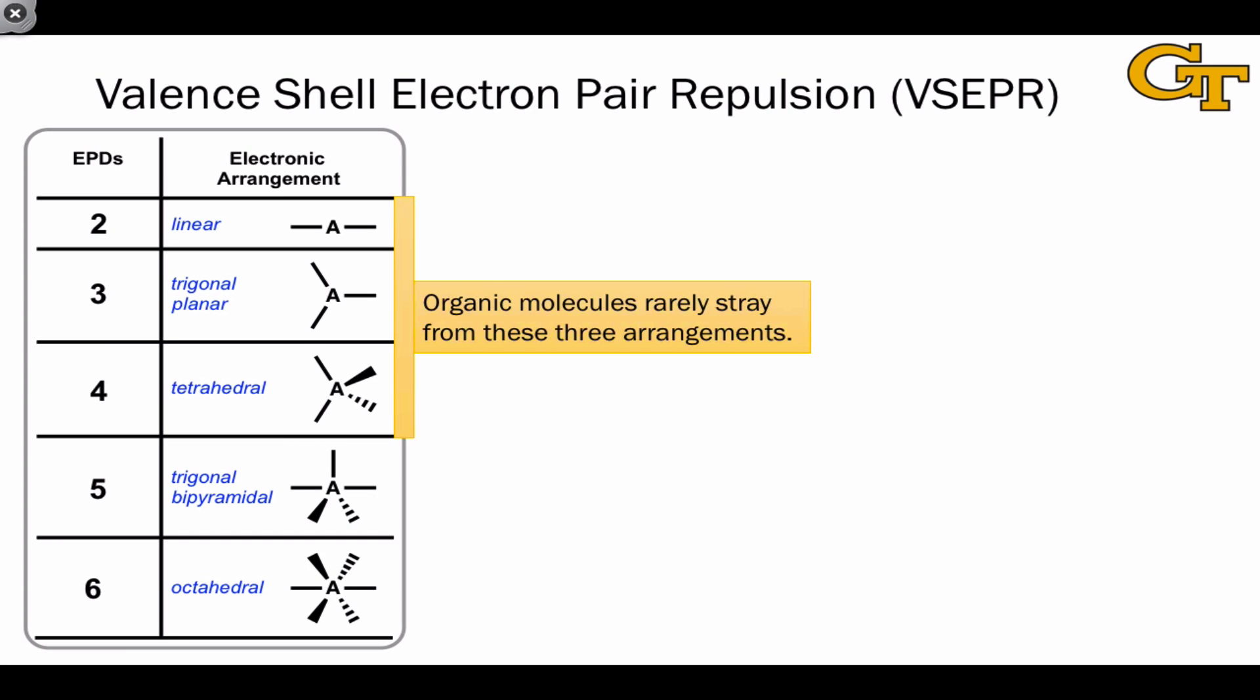Organic molecules are typically characterized by these three electronic arrangements. They rarely get to five and six electron pair domains because these necessarily violate the octet rule, since we're dealing with at least five pairs of electrons around the central atom.